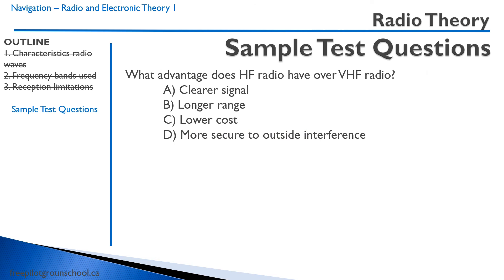What advantage does HF radio have over VHF radio? A — clear signal — is not correct; HF radio has a lot of static and is pretty terrible to talk on. B — longer range — is correct, because HF radio waves bounce off the ionosphere, giving it longer range. C — lower cost — is not correct. D — more secured outside interference — is also not correct.